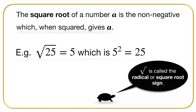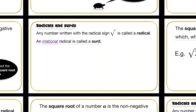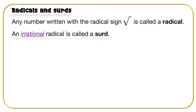Terry the Turtle says this symbol here is called the radical or the square root sign. Any number written with the radical sign — this sign here — is called a radical. An irrational radical is called a surd.